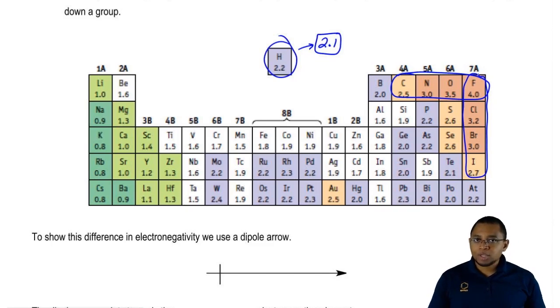So oxygen, take off 0.5, you get 3.5. Nitrogen, take off another 0.5, you get 3.0. Carbon, take off another 0.5, you get 2.5. That's basically half of the numbers that you should memorize.